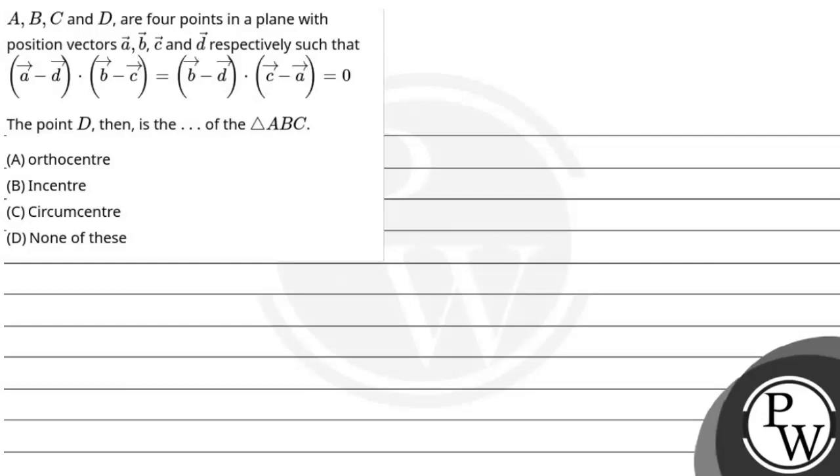Hello, let's read this question. The question says A, B, C and D are four points in a plane with position vectors a, b, c and d respectively, such that (a - d) · (b - c) equals (b - d) · (c - a) equals 0. So the point D then is the... of the triangle ABC.